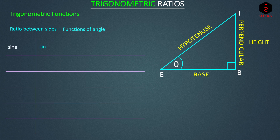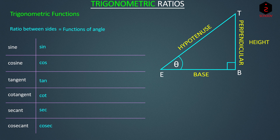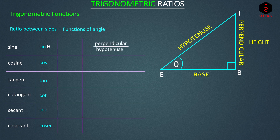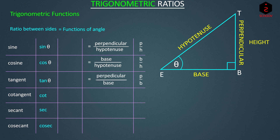By definition, sine of theta — written as sin θ — is equal to the ratio of perpendicular to hypotenuse. If perpendicular is P and hypotenuse is H, then sin θ = P/H. Cos θ is the ratio of base to hypotenuse, so cos θ = B/H. Tan θ is perpendicular to base, so tan θ = P/B. We have only three sides but six functions.